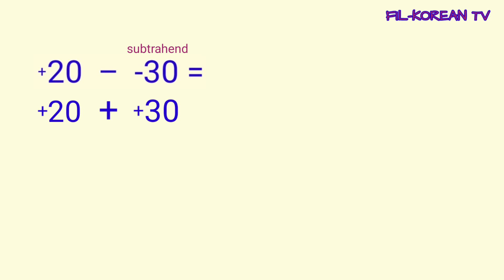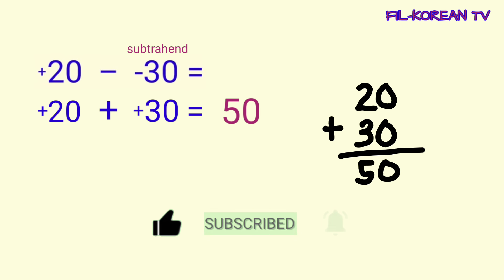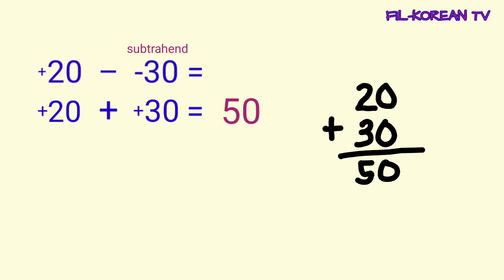Dahil pareho ang kanilang sign, ang gagawin lamang natin, i-plus natin yung numbers, then kukupyahin natin ang kanilang sign sa sum. 20 plus 30 equals 50. Ang sum ay 50. Then, lalagyan natin ito ng sign — kukupyahin lamang natin yung sign ng addends. Ang sign ng addends ay positive. Kaya, lagyan natin ng positive sign ang sum.